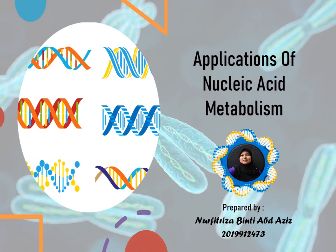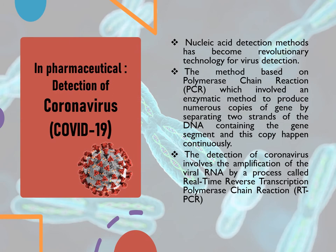I am Noor Fitriza, and I would like to present about the application of Nucleic Acid Metabolism. The first application is in pharmaceuticals, specifically in the detection of coronavirus COVID-19. Nucleic Acid Detection Methods have become revolutionary technology for virus detection. The method is based on the polymerase chain reaction, PCR, which involves an enzymatic method to produce numerous copies of genes by separating the two strands of DNA containing the gene segment. The detection of coronavirus involves amplification of the viral RNA by a process called Real-Time Reverse Transcription Polymerase Chain Reaction, RT-PCR.